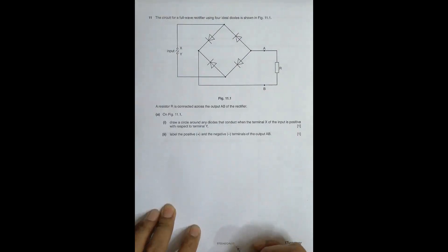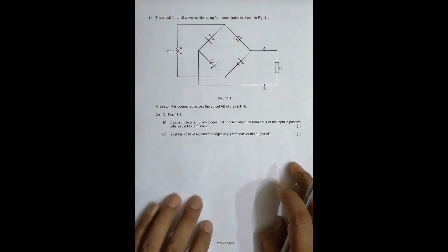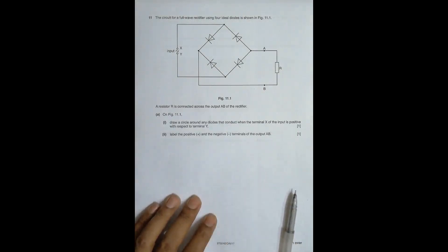Hello folks, this is 2017 October November paper 4-2 and the question number is 11. It is concerned with alternating current.